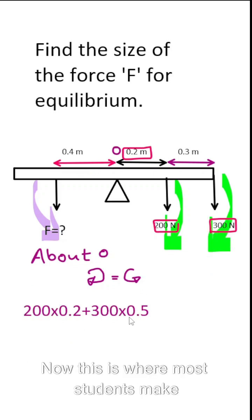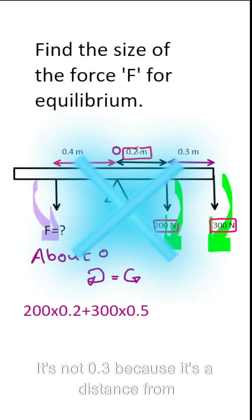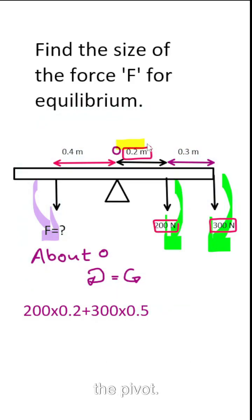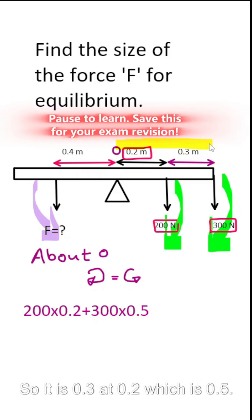Now this is where most students make mistakes. So what they do is they multiply 300 by 0.3. It's not 0.3 because it's the distance from the pivot. So you can see it's all of this distance I'm highlighting in yellow. So it is 0.3 and 0.2 which is 0.5.